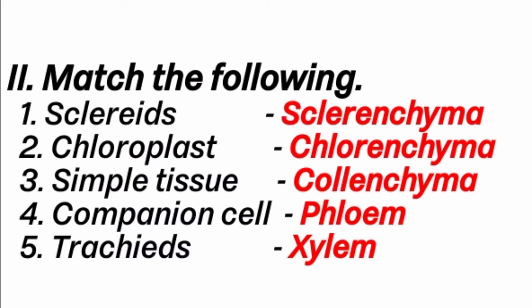Match the following. First question: Sclerites. Answer is Sclerenchyma. Sclerenchyma cells are grouped into fibers and sclerites, so Sclerenchyma has two groups: sclerites and fibers. So sclerites matches with Sclerenchyma.